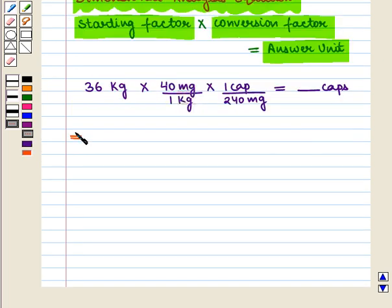Now on solving, kilograms cancel with kilograms, and milligrams cancel with milligrams. 4 times 1 is 4, and 4 times 6 is 24.